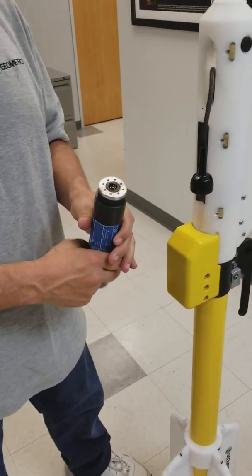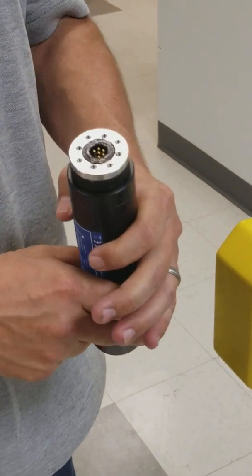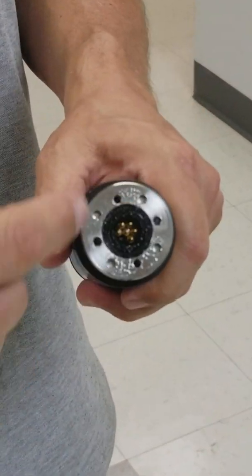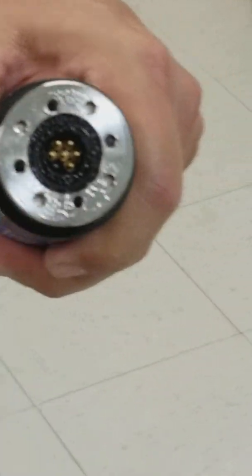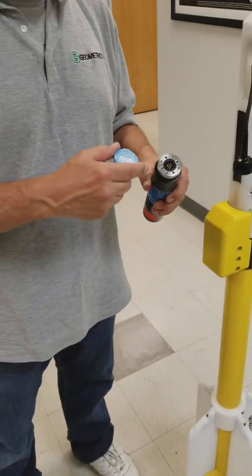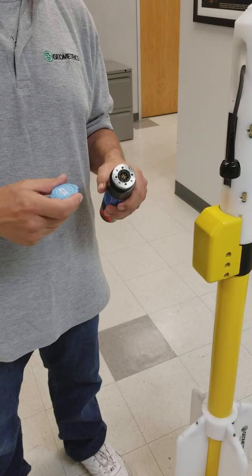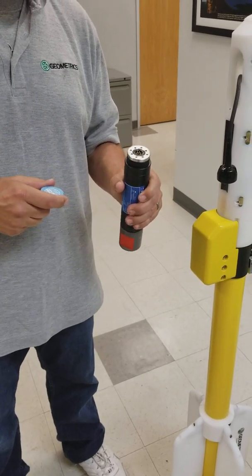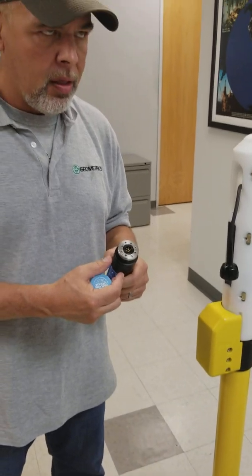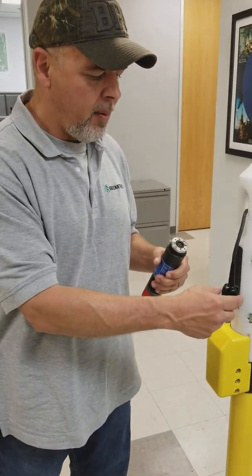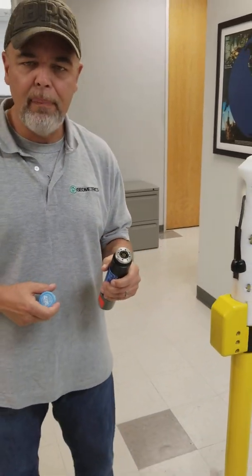Here you have the altimeter connector and you can see this is a new altimeter and it's loaded up pretty good with the grease. This is the grease that we use here. Whenever you are taking these apart, you want to make sure that there's a layer of grease in there so that there's a good connection with the pins and it ensures a better seal.